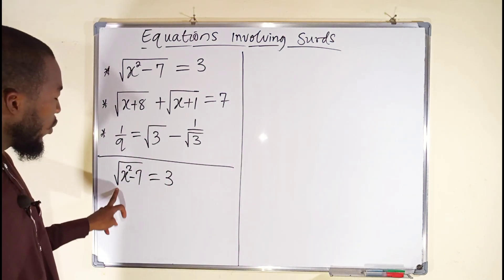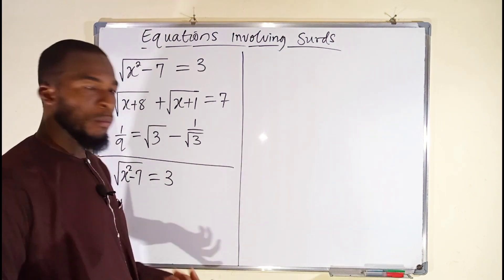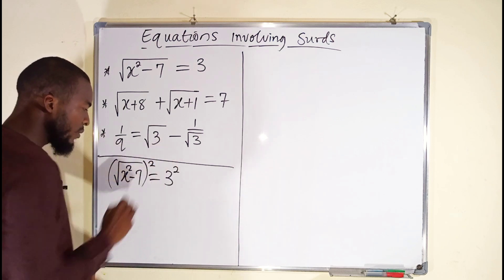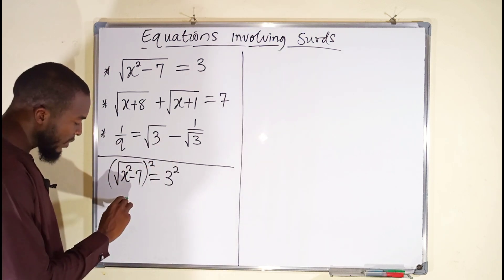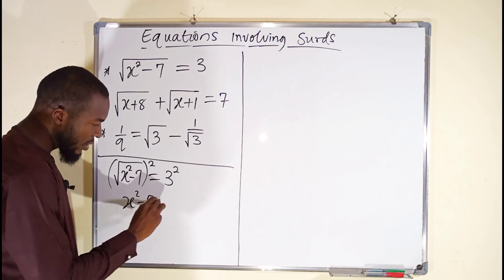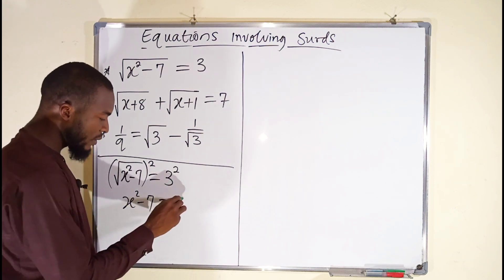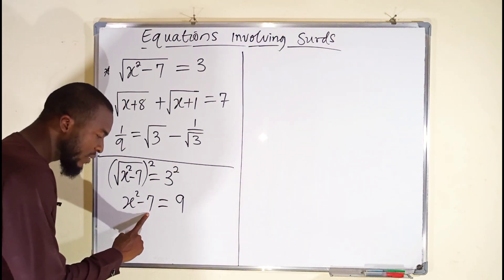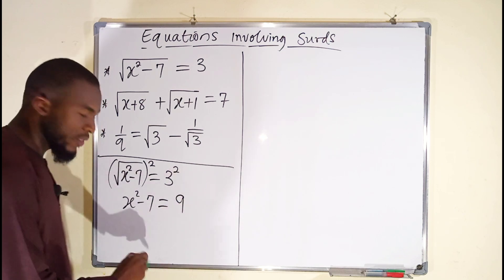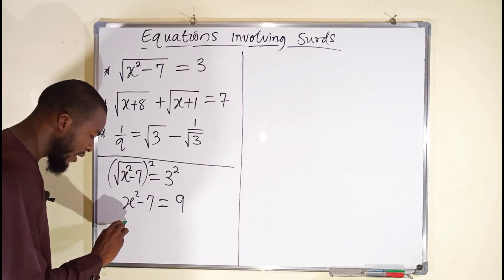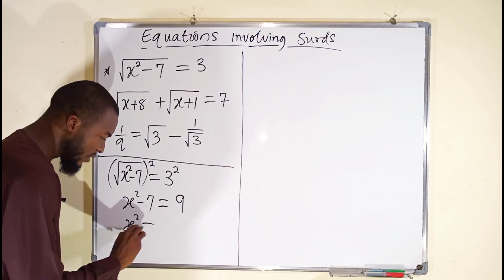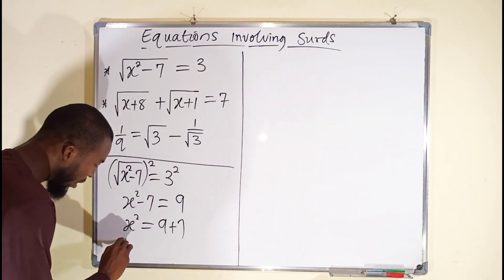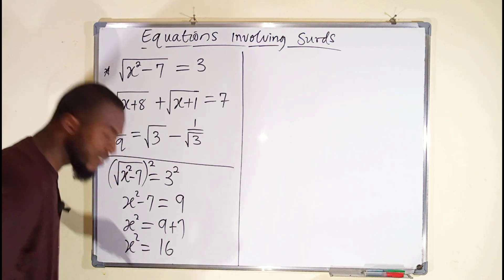We know that squaring will always cancel a square root, so we are free to square both sides. Squaring cancels the square root, leaving x squared minus 7 on the left. On the other side we have 9. This is a real number, and this is also a real number. We can bring the 7 across, leaving x squared on the left. So x squared equals 9 plus 7, which gives x squared equals 16.